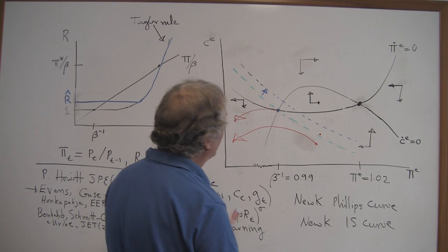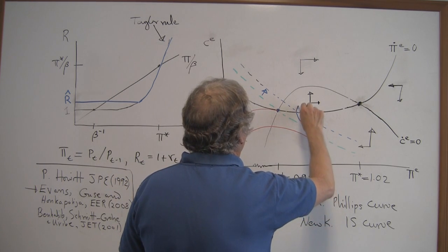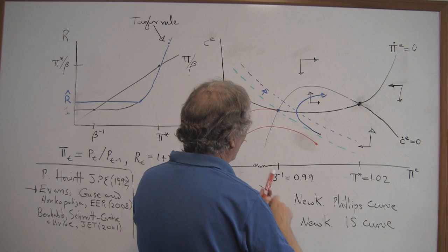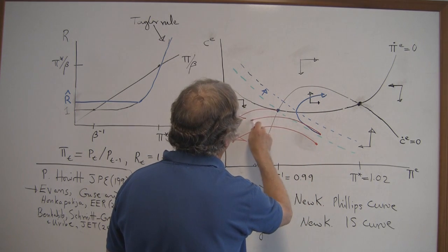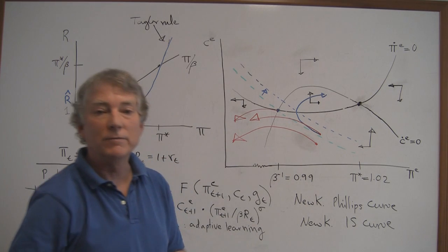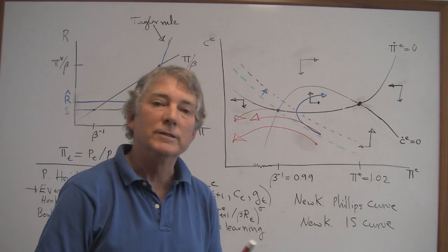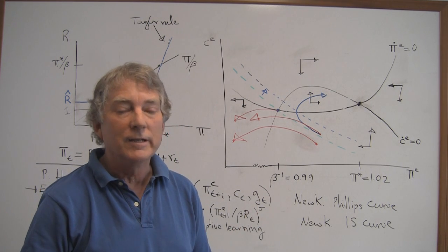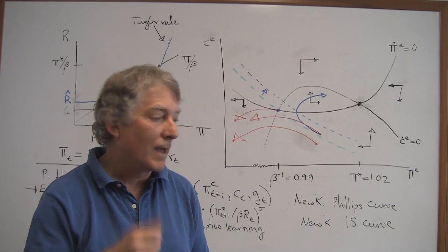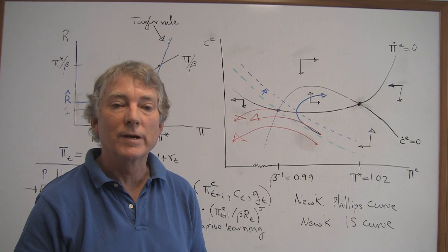But this now pushes us into the deflation trap region. And so instead of actually going back to the equilibrium, we're now pushed into a position where we are going off again to a deflation, further deflation and falling output. So that's my argument based on adaptive learning dynamics for why not to increase interest rates right now.